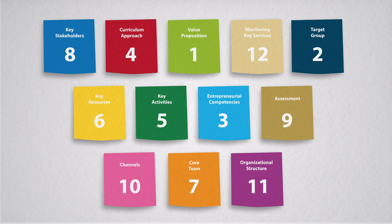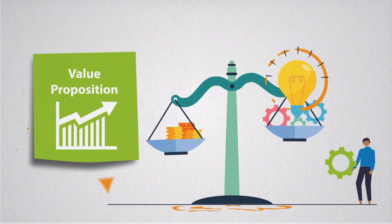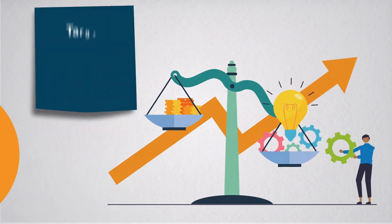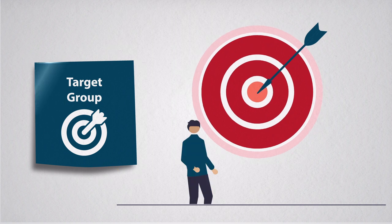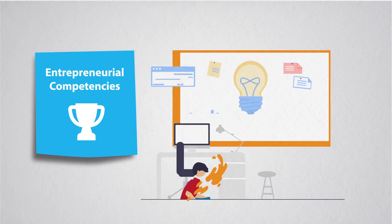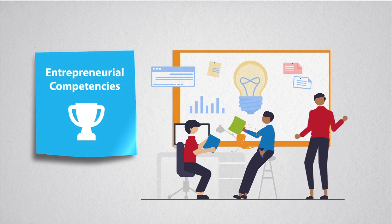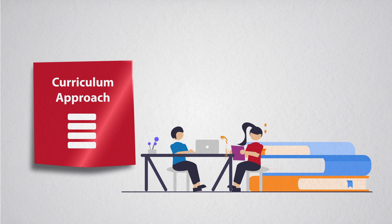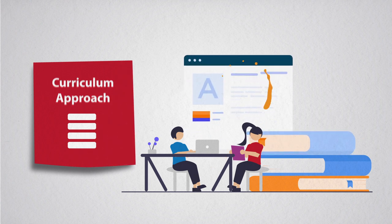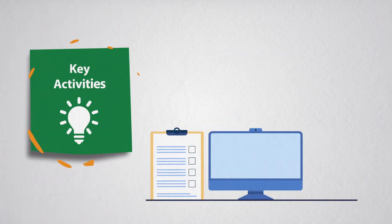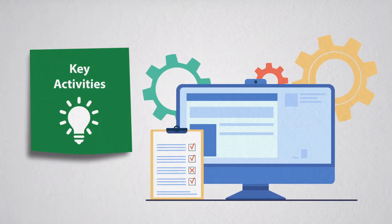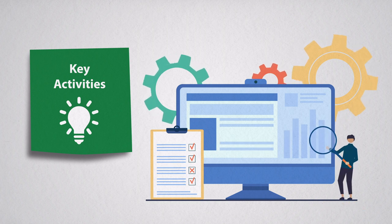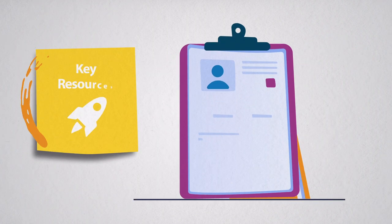The 12 steps include: identifying your value proposition; defining and understanding your target audience; determining which entrepreneurial competencies are important for your target group; integrating entrepreneurial learning into curricula; developing specific activities to nurture an entrepreneurial mindset; and outlining the resources needed for entrepreneurial learning to flourish.